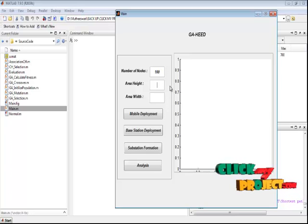And here we need to enter the coverage area height and also coverage area width. And by pressing the mobile deployment button, we deploy the sensors randomly.